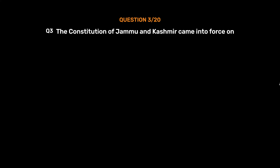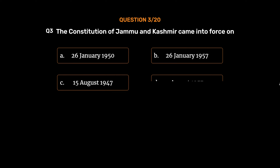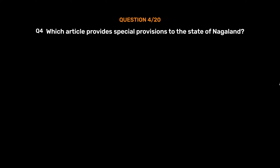Question No. 3: The Constitution of Jammu and Kashmir came into force on — Option A: 26th January 1950. Option B: 26th January 1957. Option C: 15th August 1947. Option D: August 1957. The correct answer is Option B: 26th January 1957.